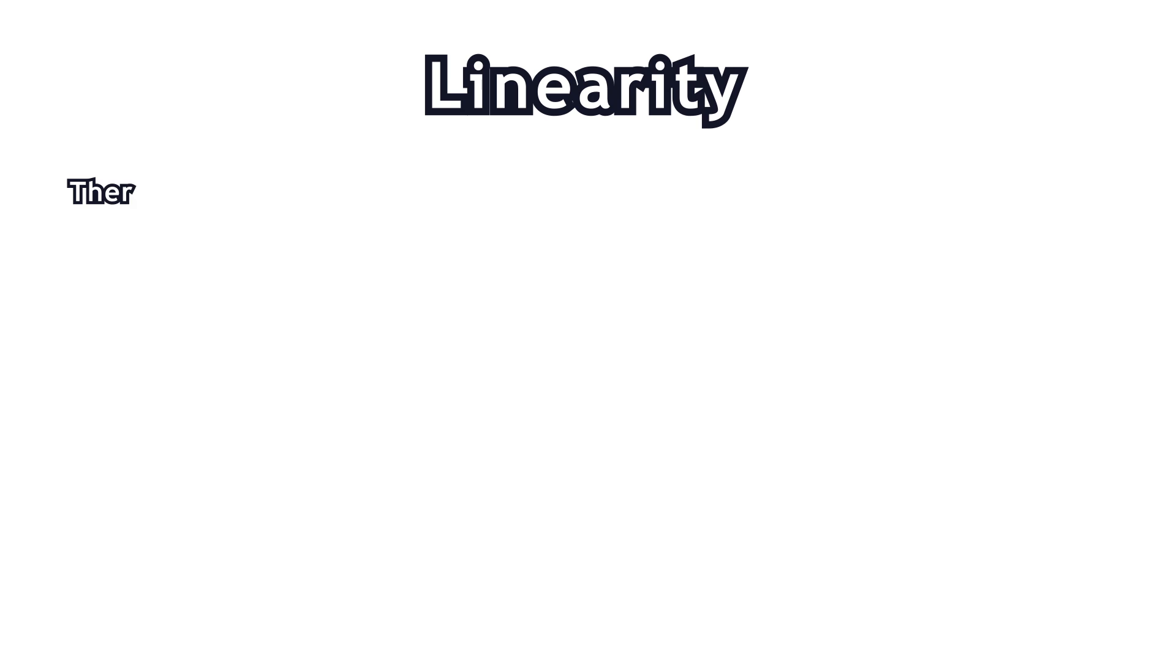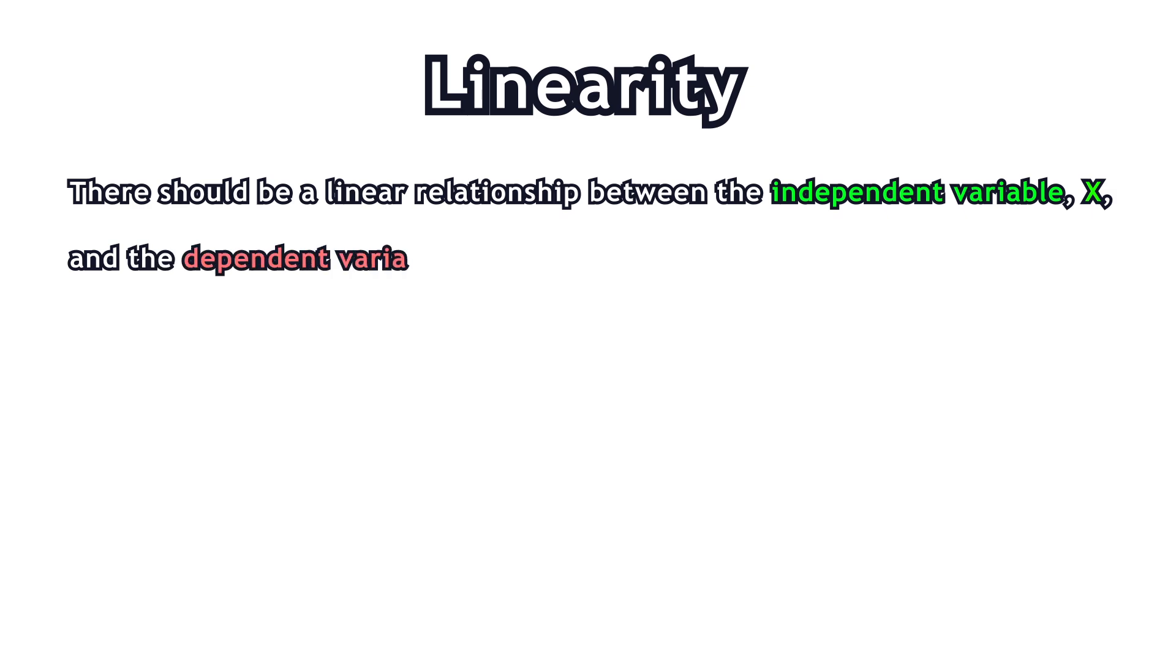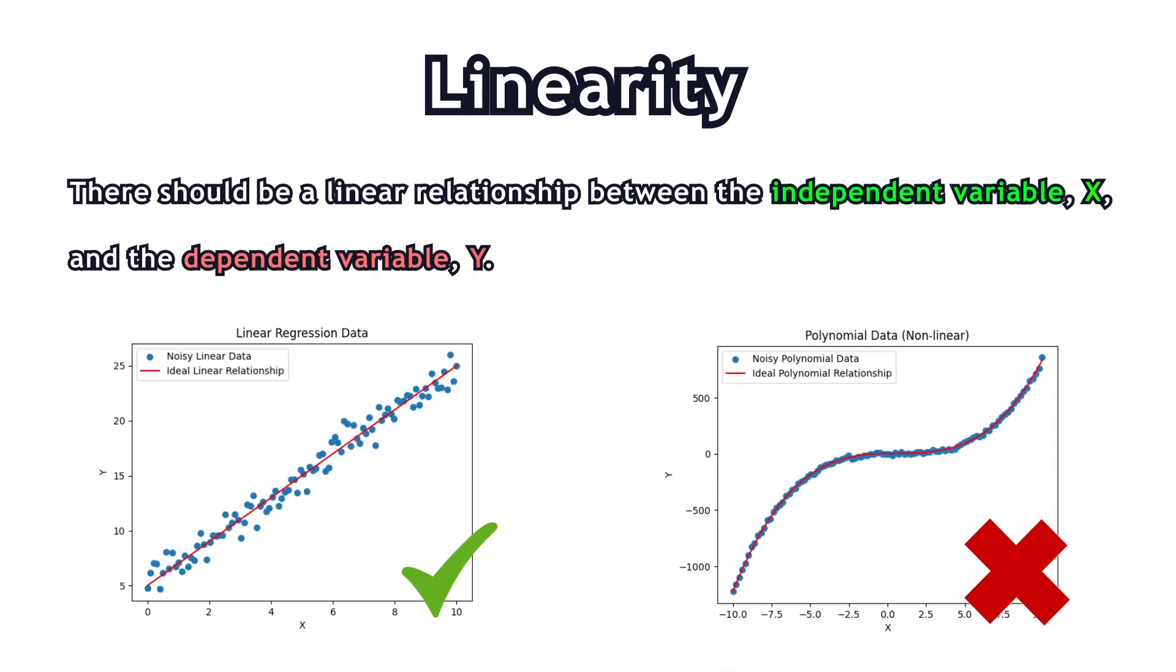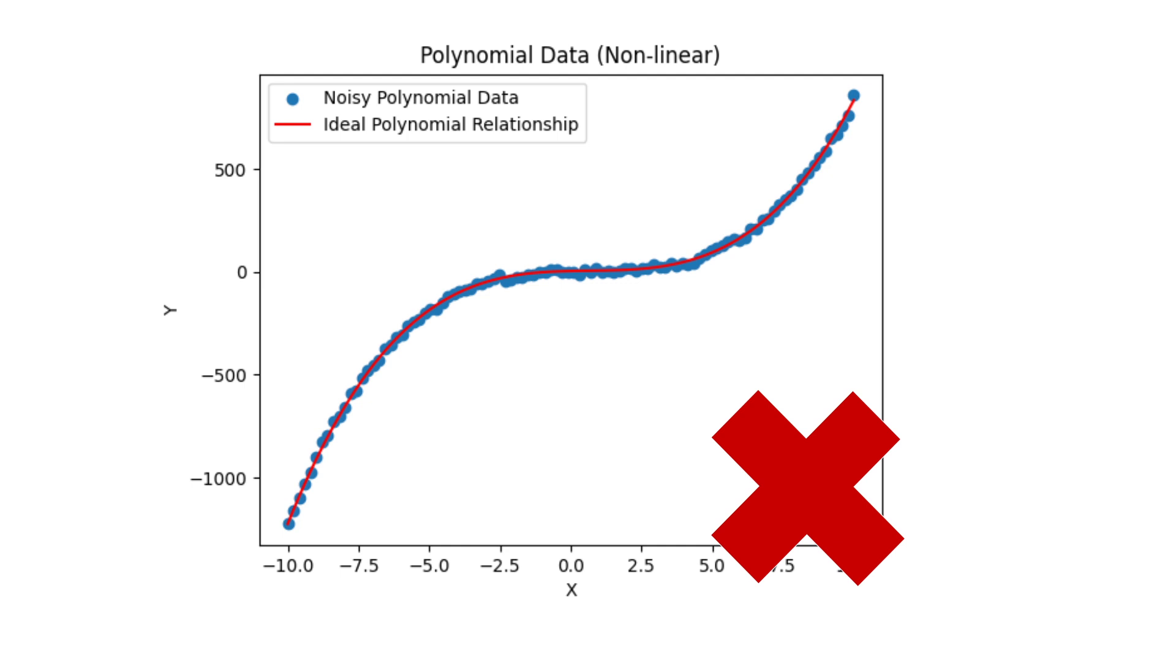The first assumption says there should be a linear relationship between the independent variable X and the dependent variable Y. If the relationship isn't straight, the model's predictions will be off because it's trying to fit a straight line to a potentially curved trend.